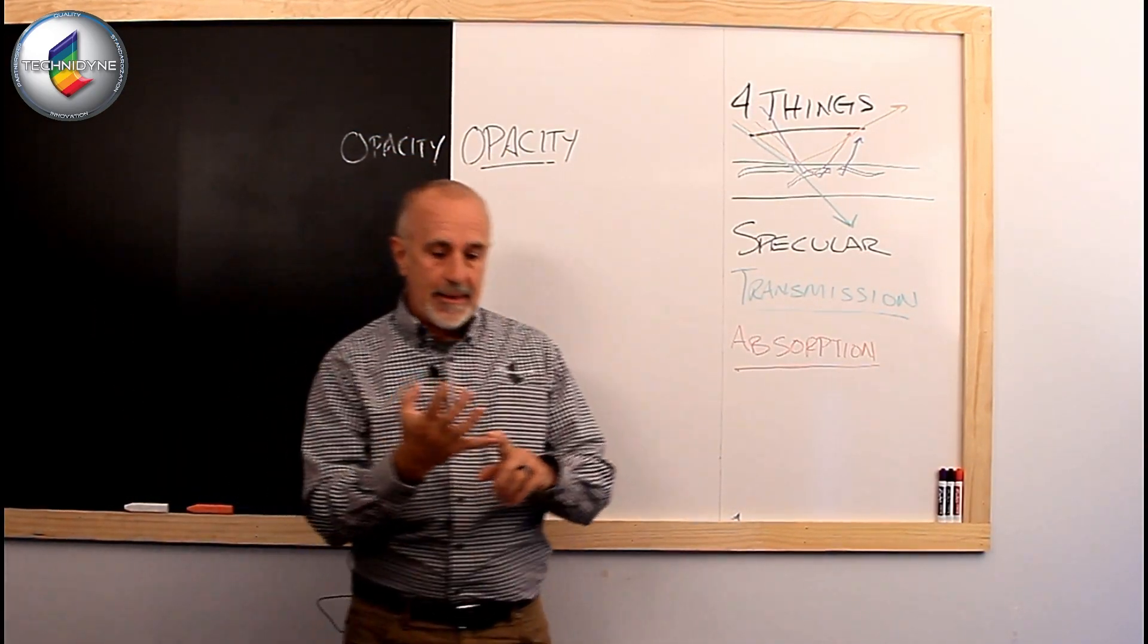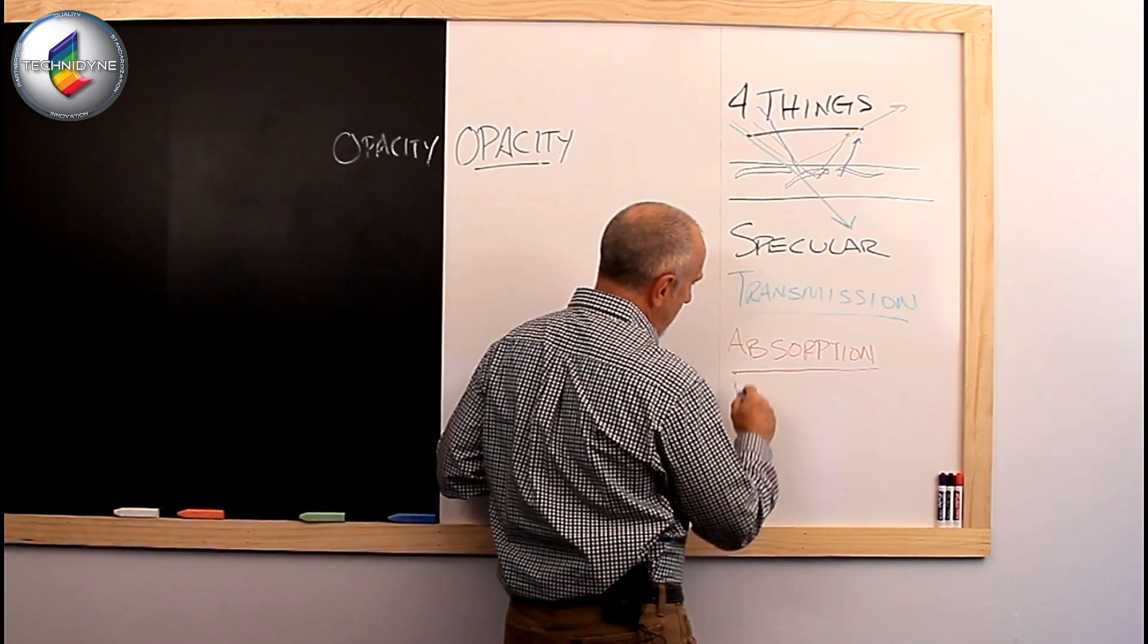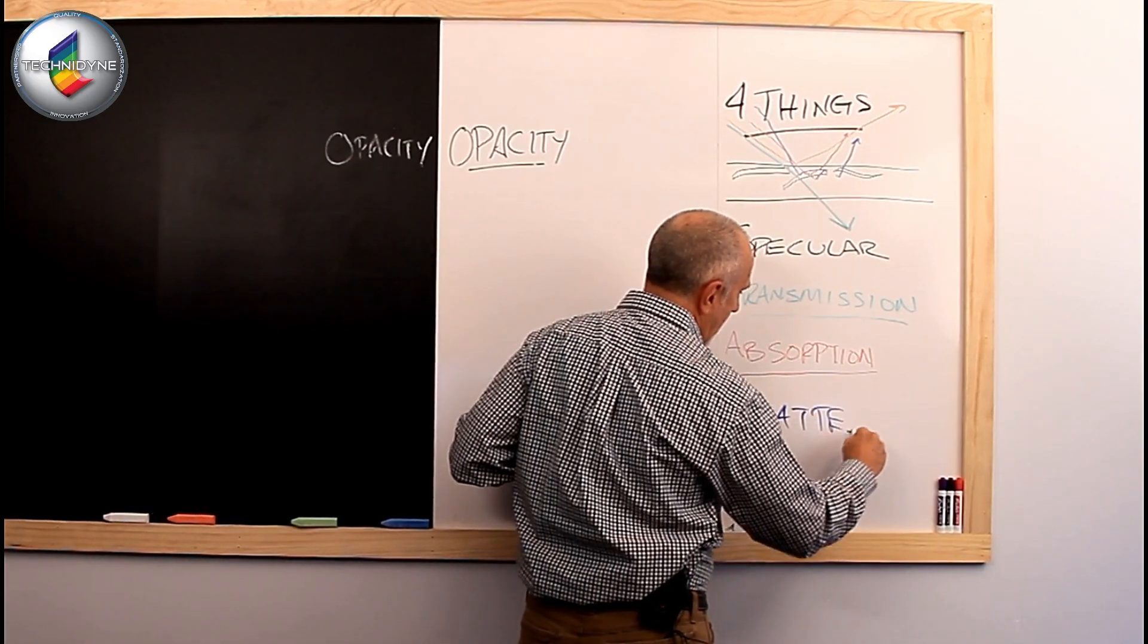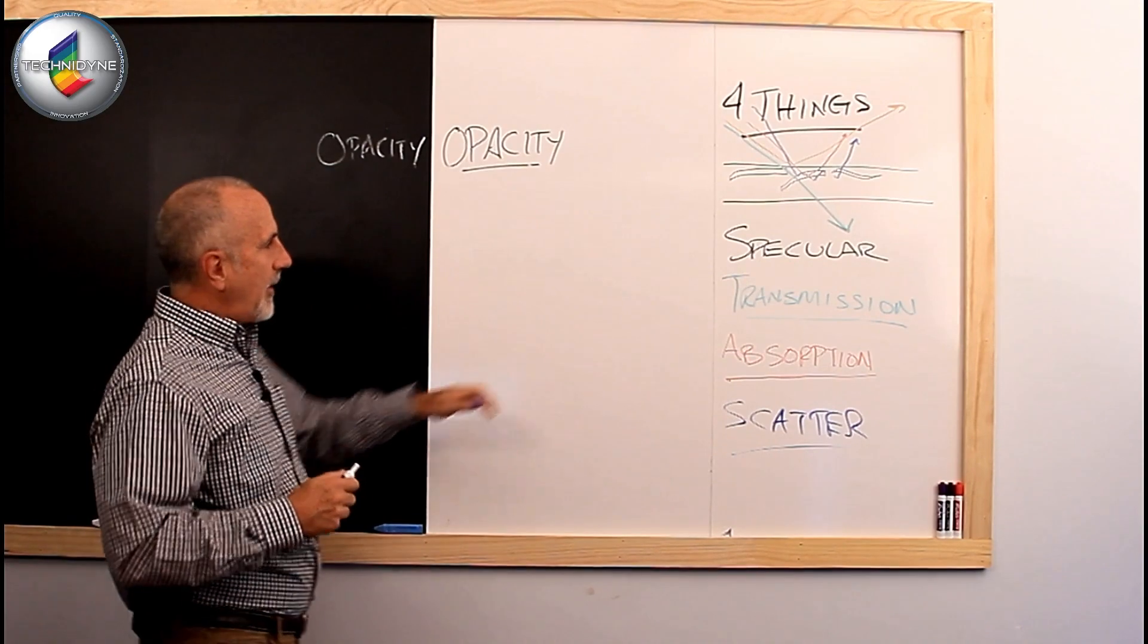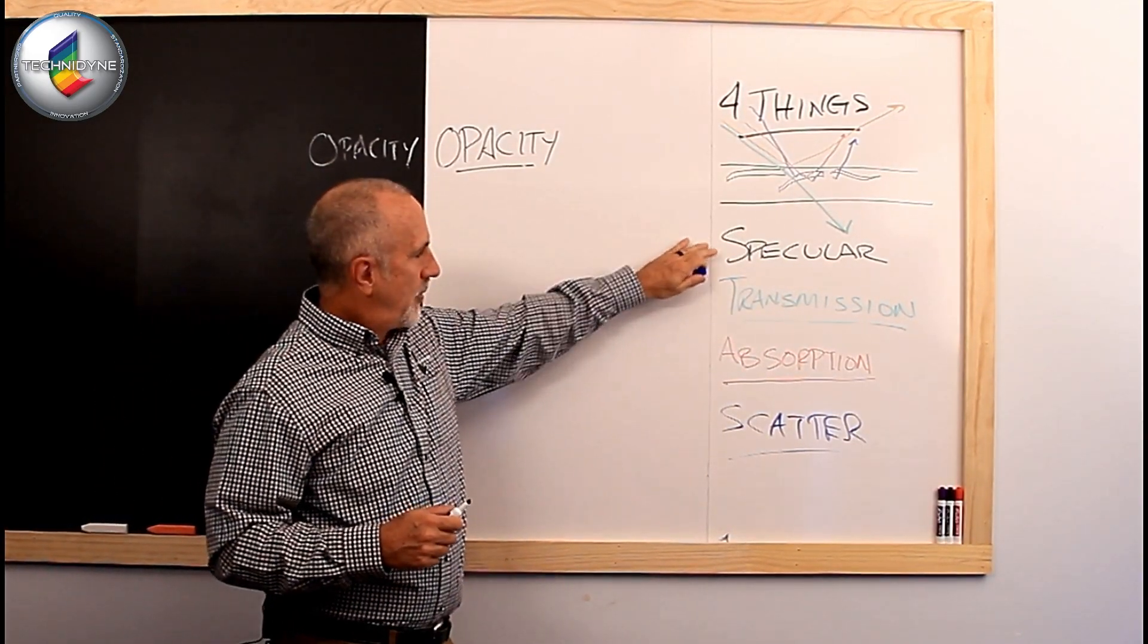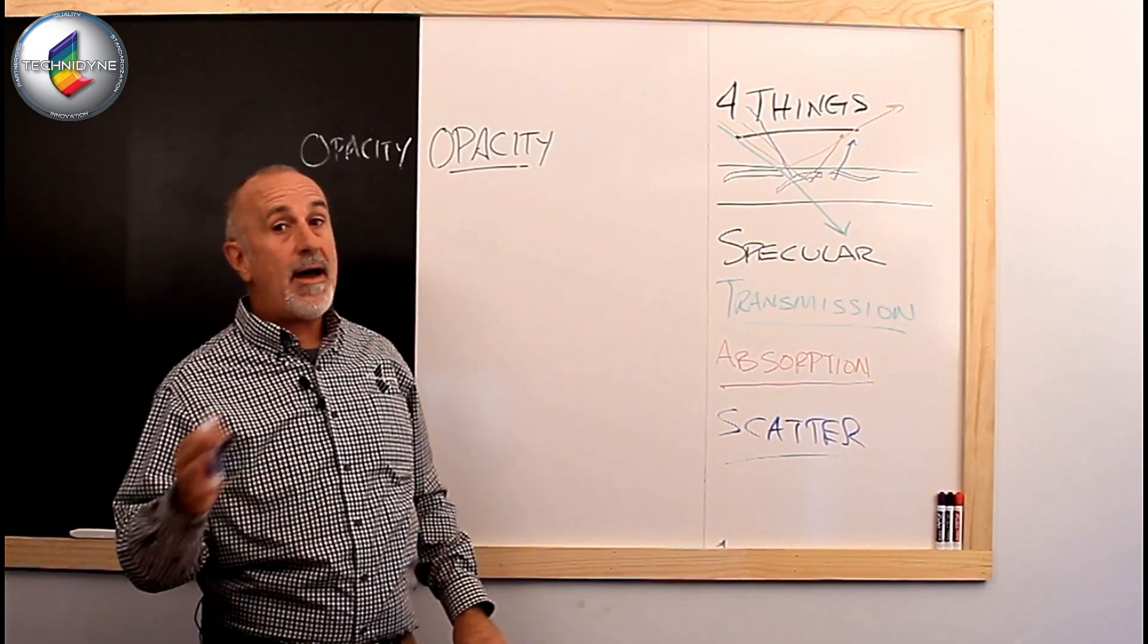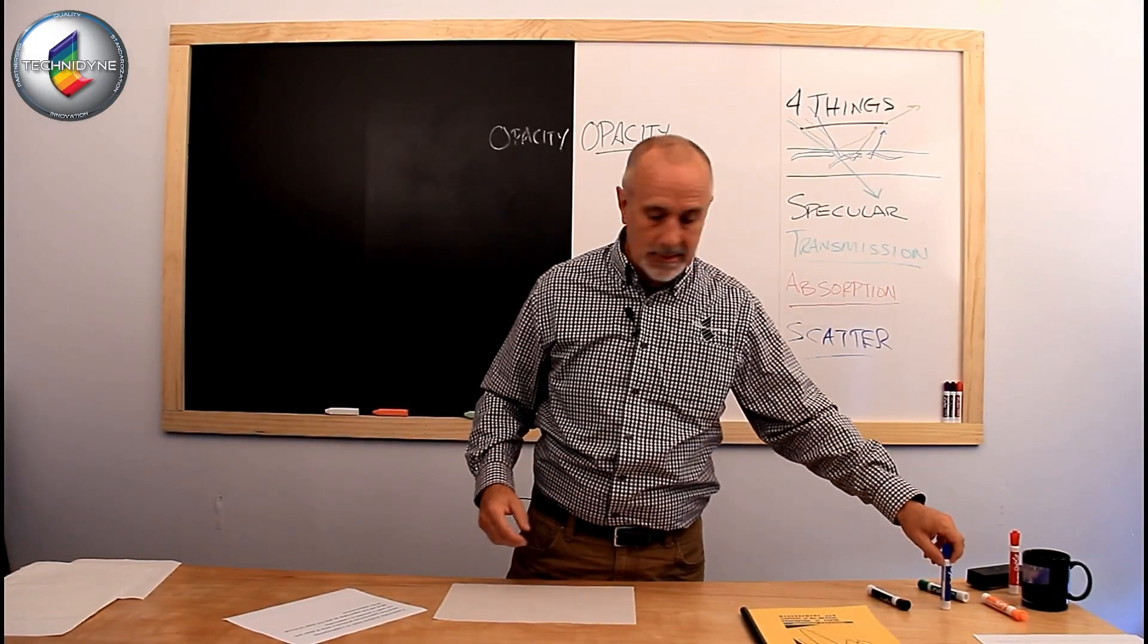So we've got four things we just talked about. The specular reflectance, we talked about transmission, we talked about absorption, and we talked about scatter. Now, of these four guys here, specular will have minimal impact on opacity, but certainly transmission, absorption, and scatter will all have a tremendous impact on how opaque a piece of paper might be, or a flexible packaging material would be.